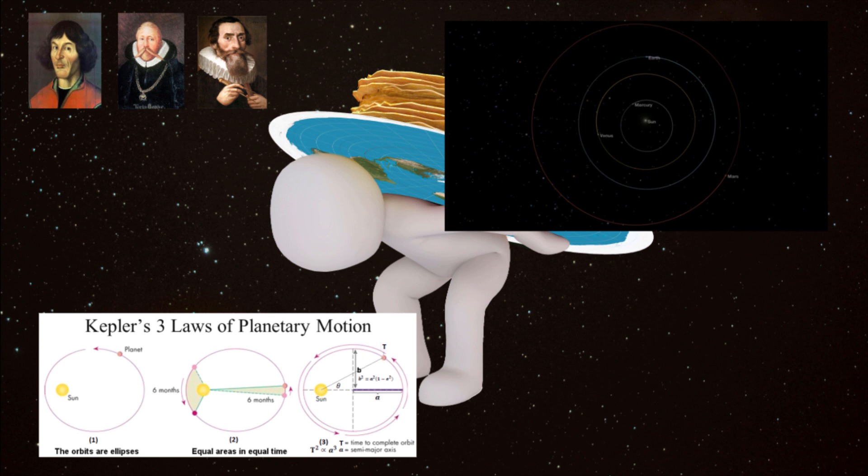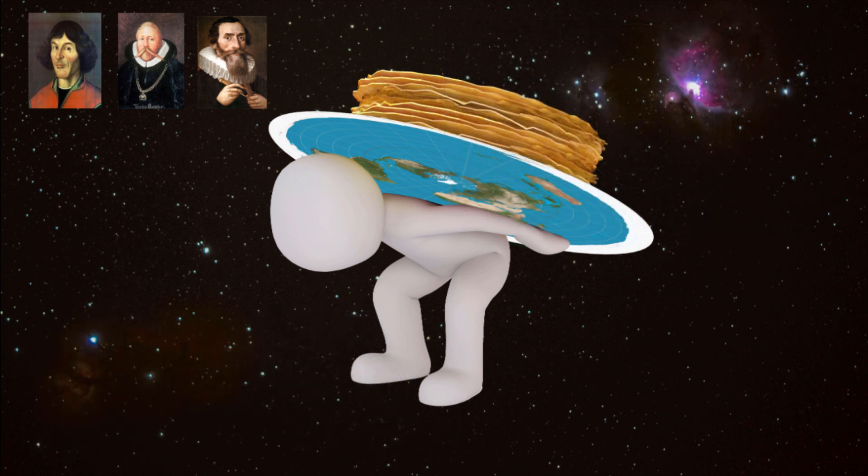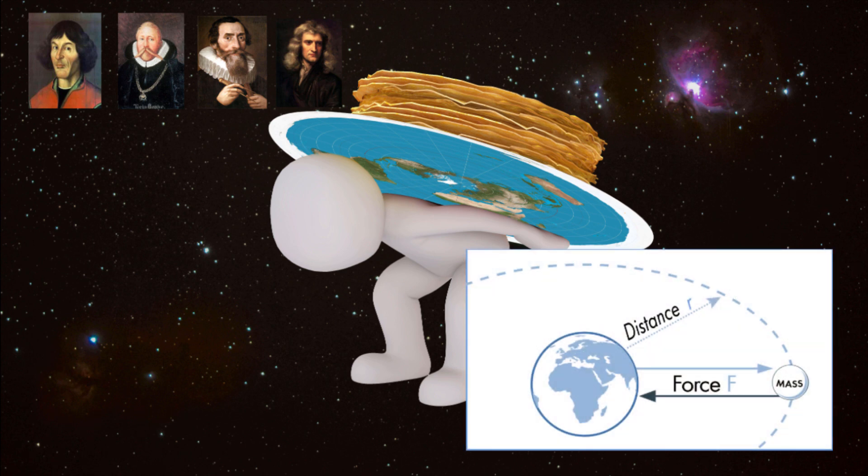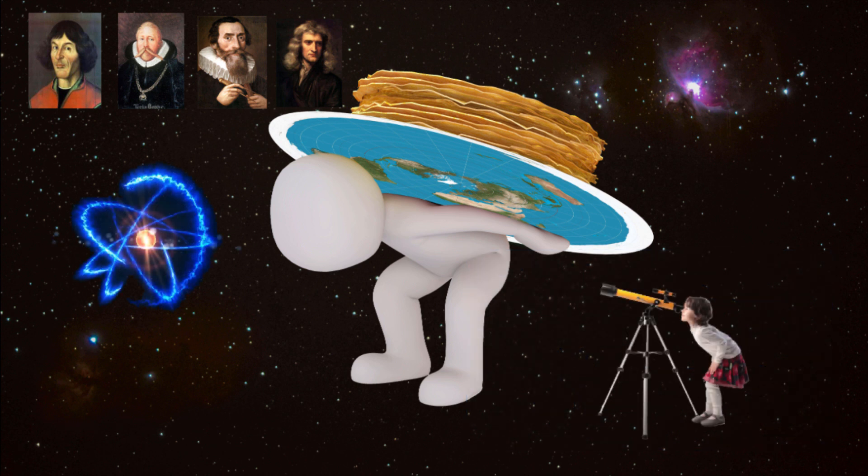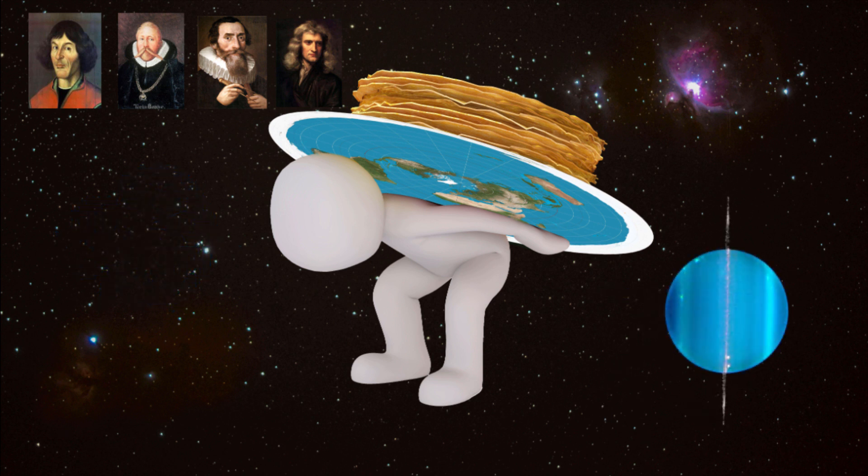While Kepler didn't necessarily understand why the orbital mechanics worked this way, he was able to precisely predict their location in the sky year after year. The why of orbital dynamics wasn't answered until 1687 by Sir Isaac Newton and his laws of universal gravitation. Newton theorized that objects attracted each other based on their distance and mass. This series of advances and discoveries is the basis of much of today's physics and astronomy, and it brings us to the purpose of today's video, the odd orbit of the planet Uranus.